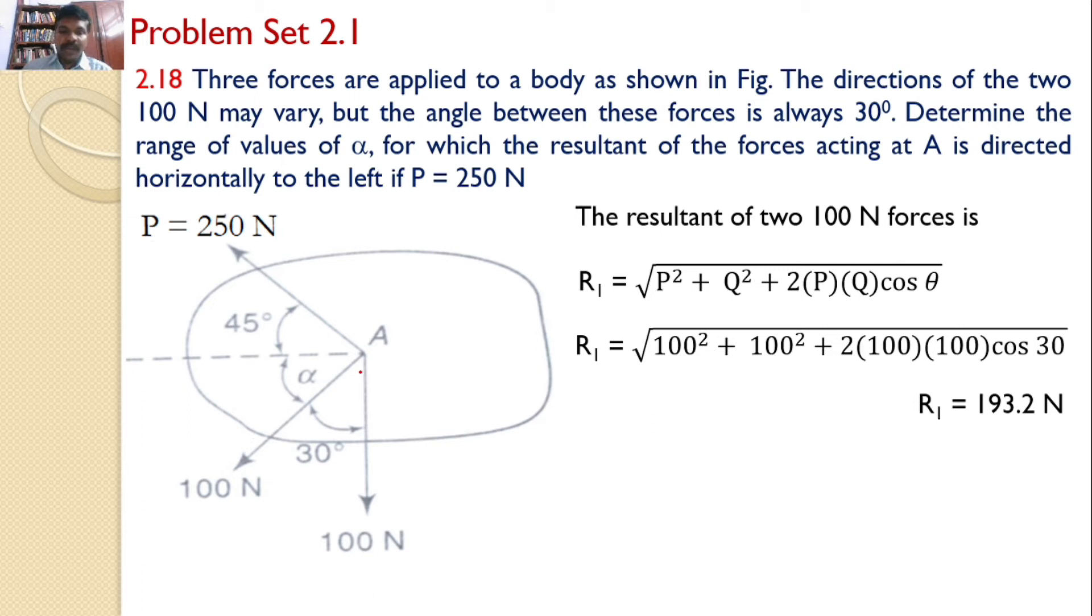And angle made by the resultant with either of the 100 newtons can be calculated by using the equation sin beta equals Q by R into sin alpha. So, sin beta equals 100 by 193.2 into sin 30 which gives the value of 15 degrees.